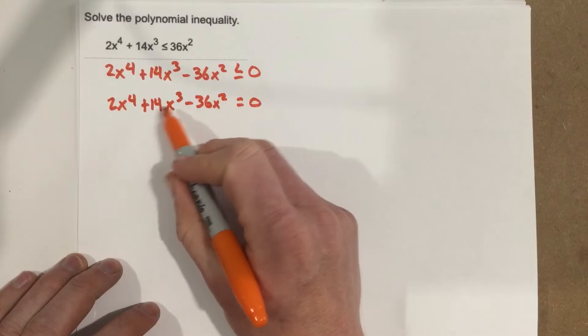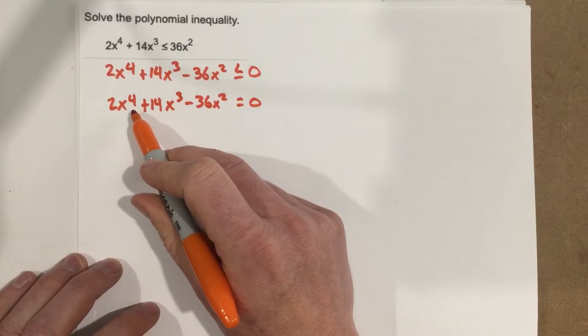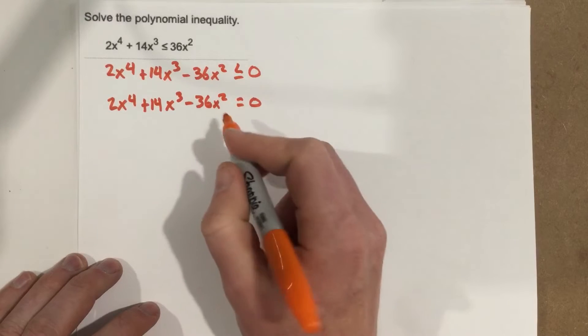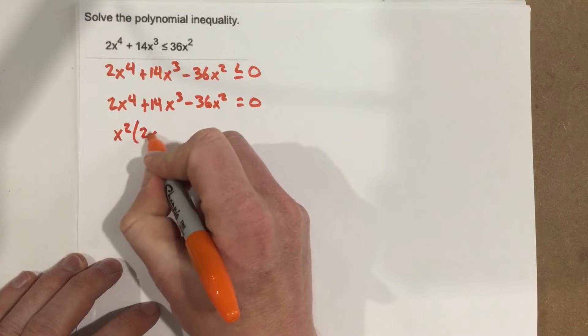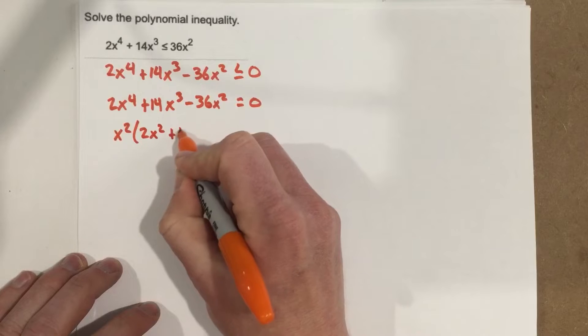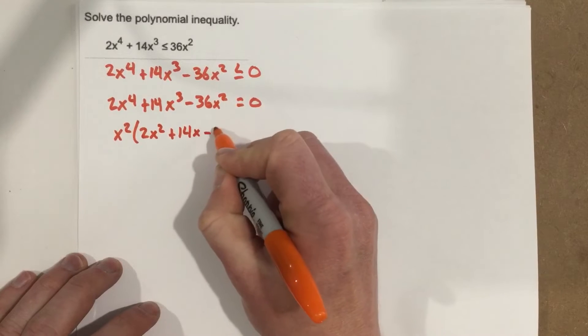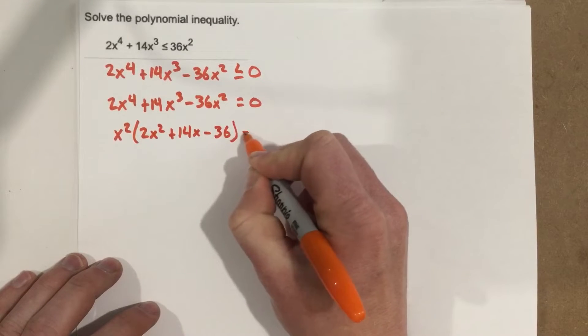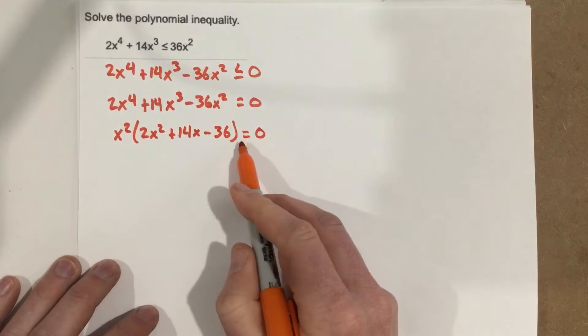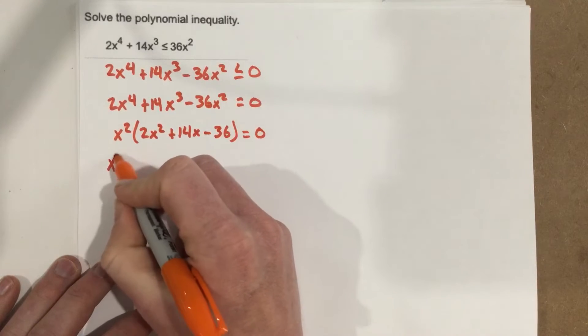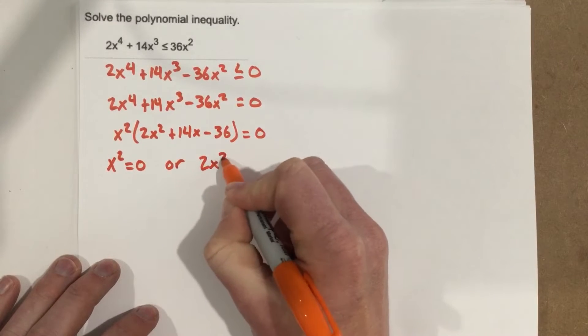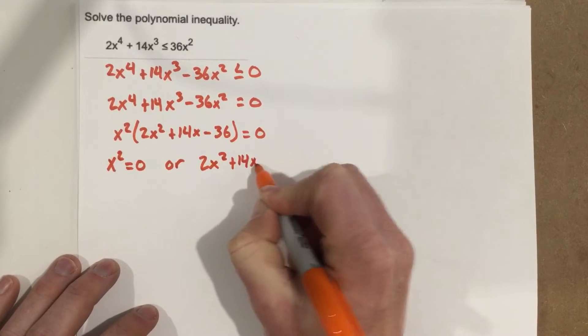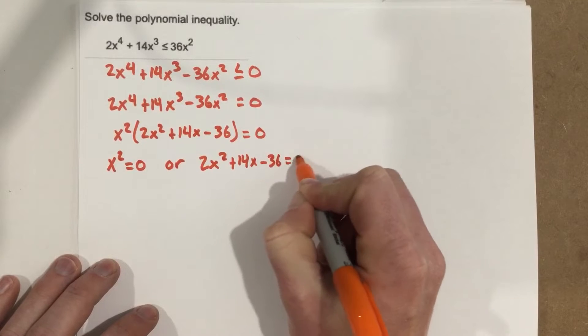So I want to factor out x squared out of each of those terms because I noticed that they all have x terms in them and they have x squared terms in them. So I end up with x squared, 2x squared plus 14x minus 36 equals zero.